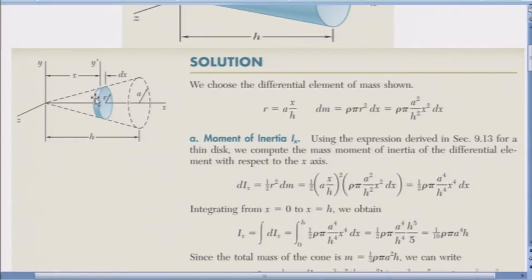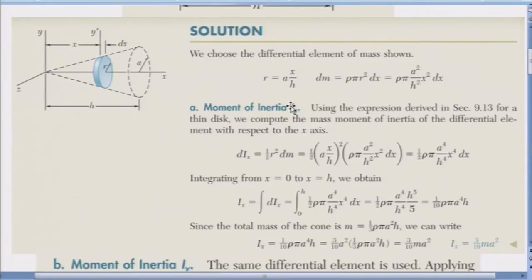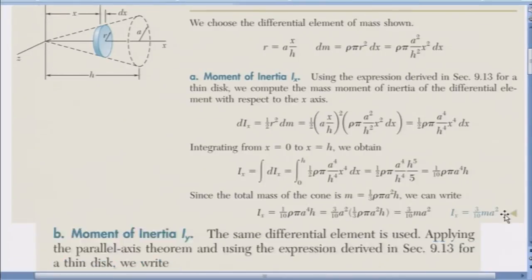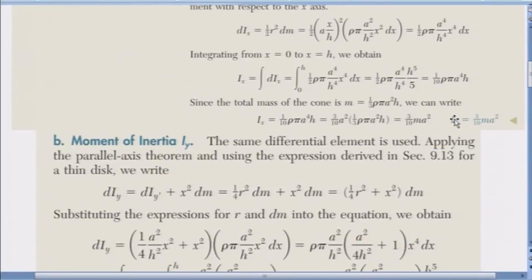We already know what are the mass moment of inertia about 3 perpendicular axes. So you see that r is represented by a multiplied by x over h, right? So that is the main basis. Ultimately the answer, here you have the answer for Ix: 3 by 10 m a square.